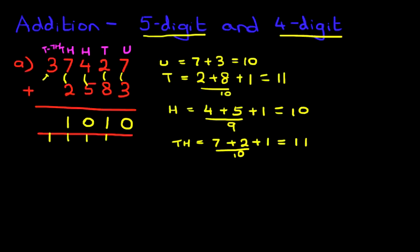And lastly, we have the 10 thousands. We've got 3 plus 0. Don't forget the 1 over here. Plus 1. So 3 plus 1 is 4. So that is our answer. 41,010.